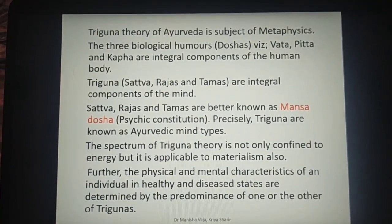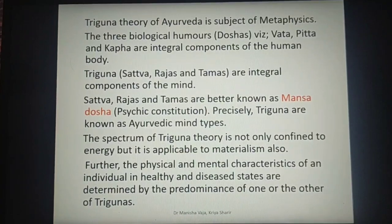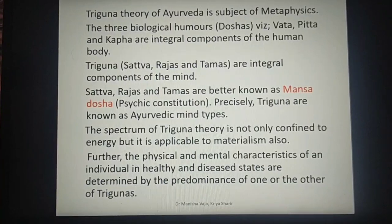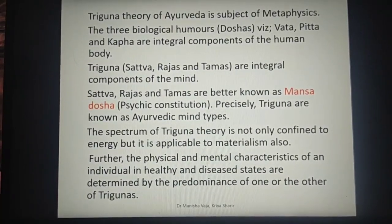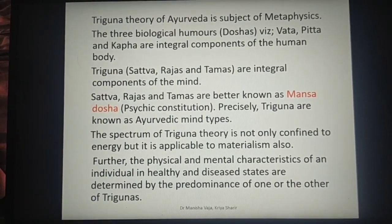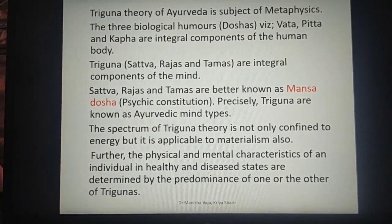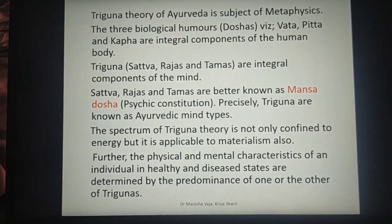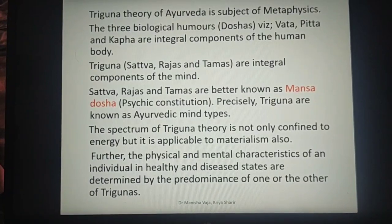Sattva Guna is beneficial — it is Prakashak and Pravartak; it gives knowledge. That is why we do not consider it as a Manas Dosha. Precisely, the three Gunas are known as the Ayurvedic mind types: Sattvic Mana, Rajasic Mana, and Tamasic Mana. The spectrum of the three Guna theory is not only confined to energy but is also applicable to materialism.